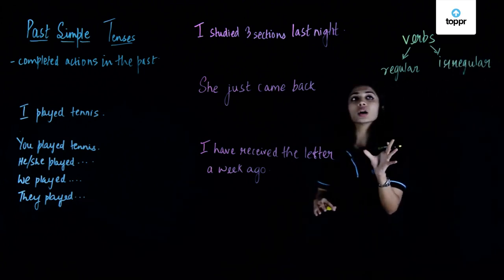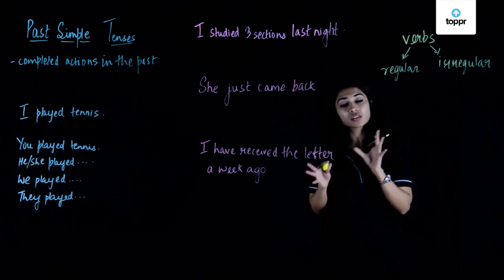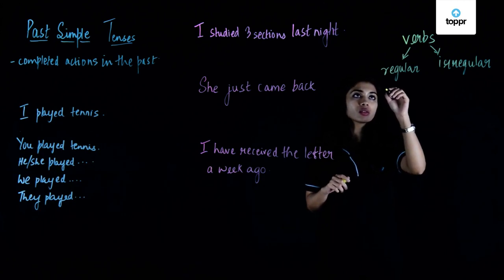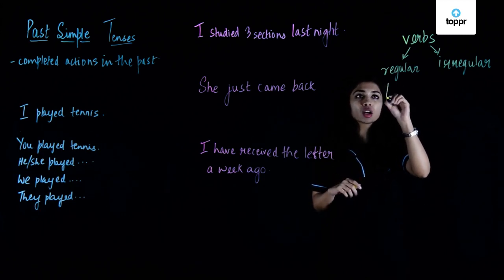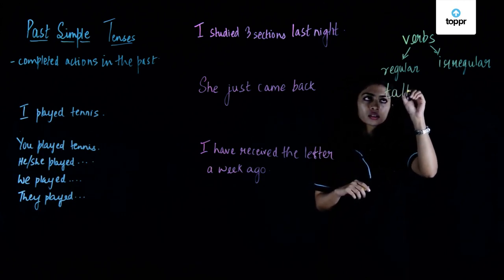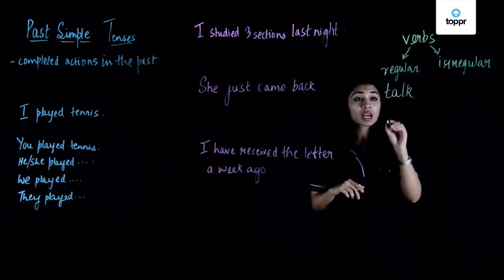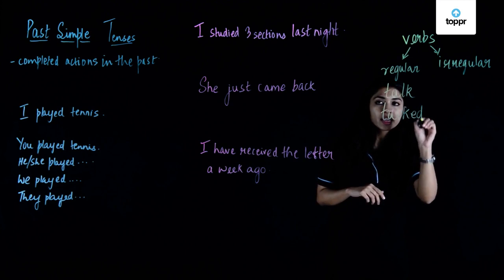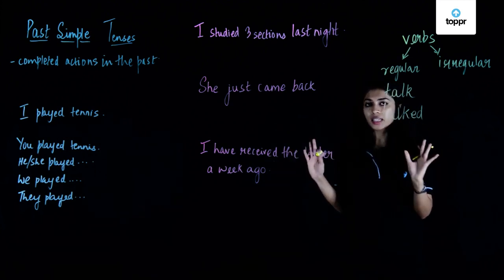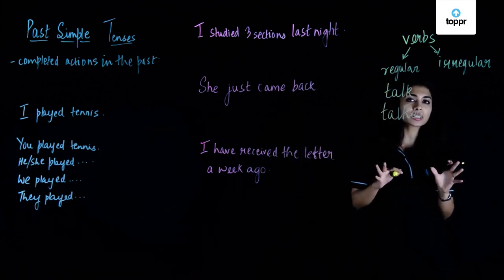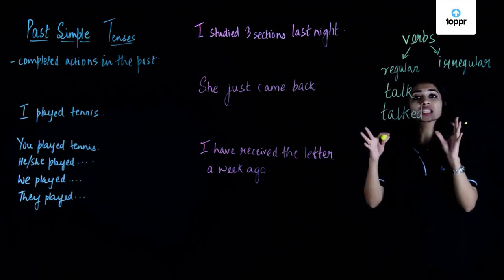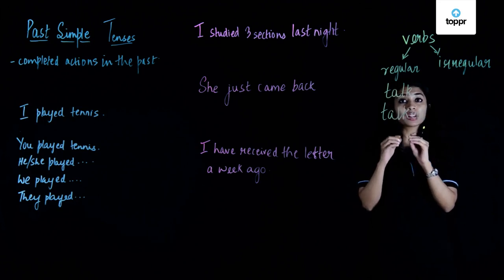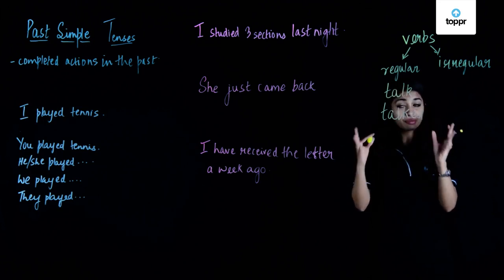Regular verbs are those that form their past form by adding '-ed'. So let's take the regular verb 'talk' — the past tense becomes 'talked'. I talk to you every day, and we talked last night. Whereas irregular verbs form their past forms not by adding '-ed', but with a completely new or different word.